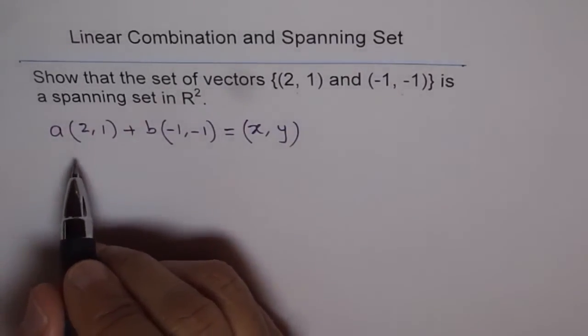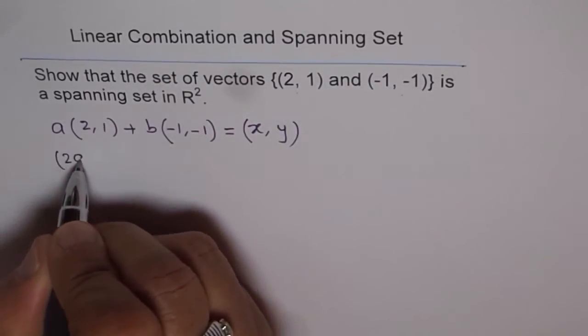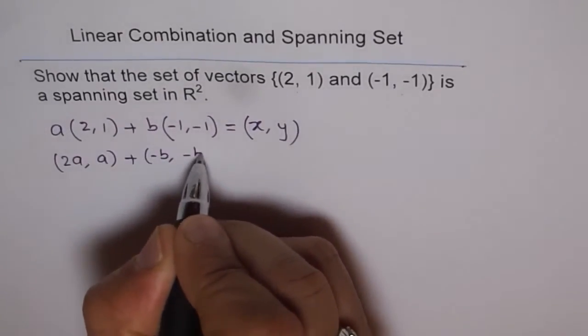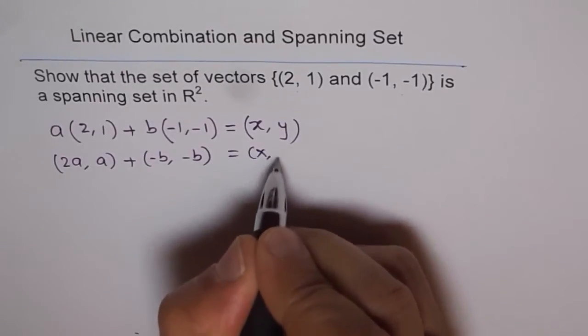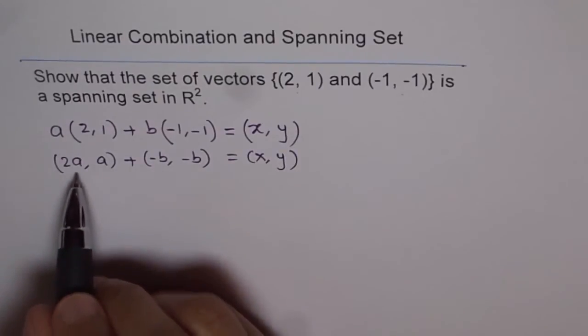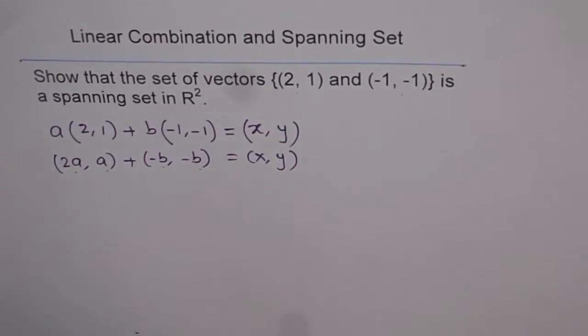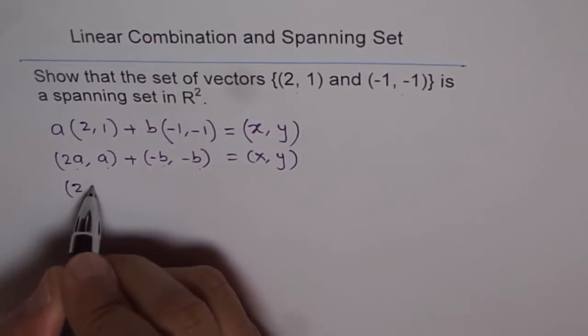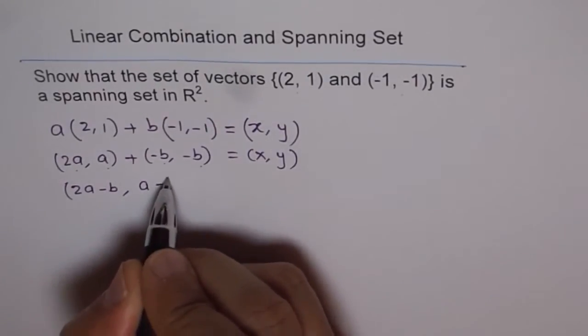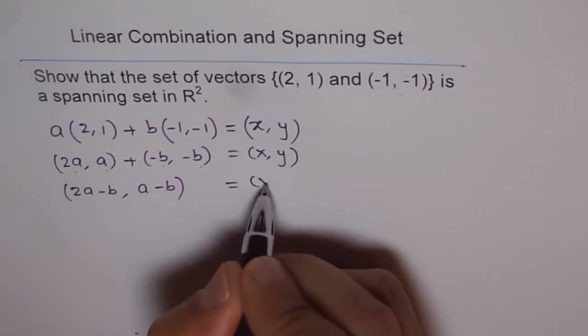So let's do scalar multiplication. And when we do scalar multiplication, we get here (2a, a) plus (-b, -b) equals (x, y). Now we can do properties of vector addition. So when we add, we can add x components and the y components.